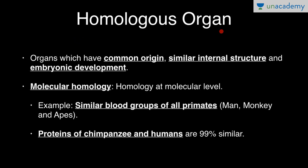Organs which have common origin, similar internal structure, and embryonic development are called homologous organs. Basically, homology means common ancestry — structures which have common ancestry, similar internal structure and embryonic development are called homologous organs. We also have molecular homology, which is homology at the molecular level; a common origin of molecules is termed molecular homology.